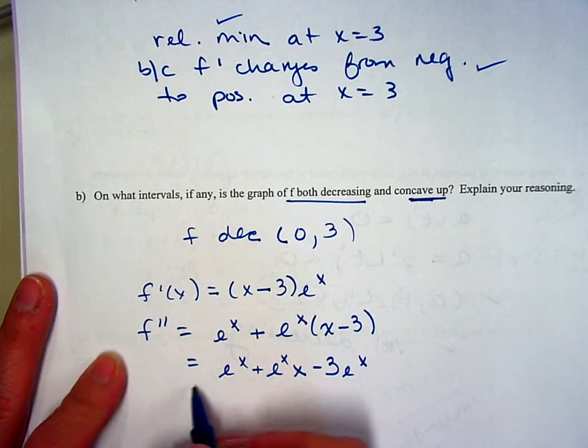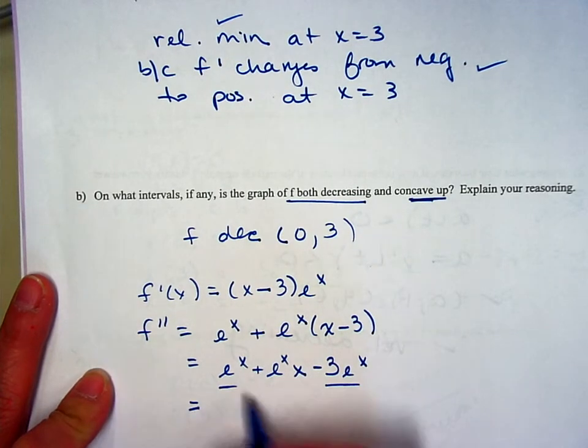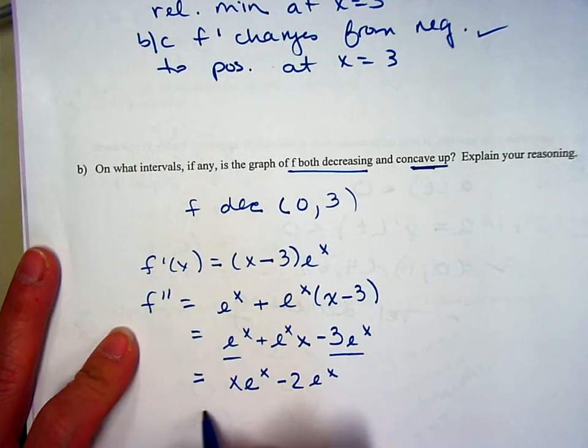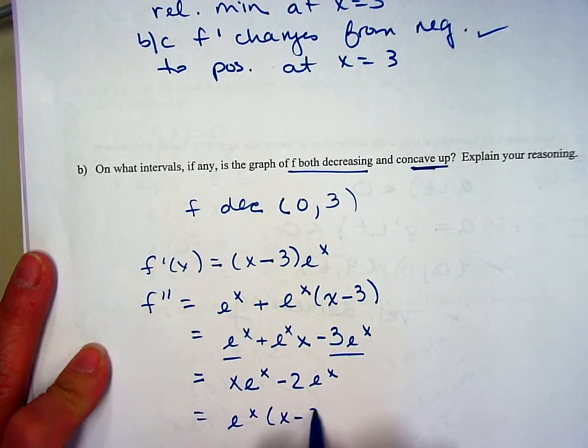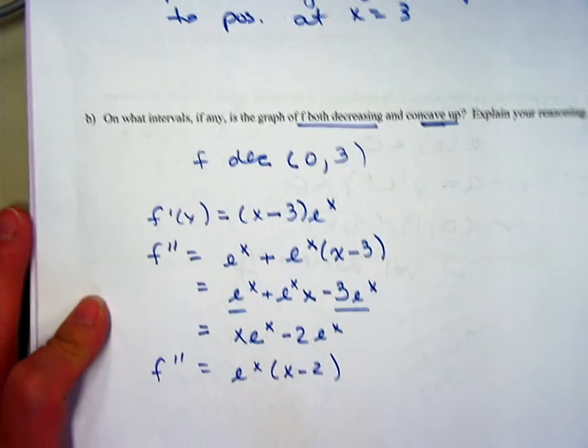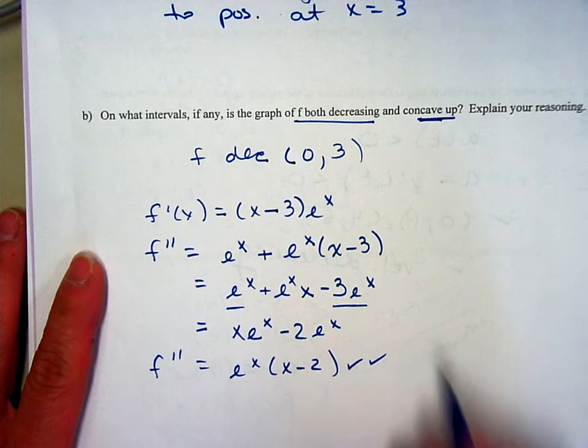I'm going to combine like terms. So I have e to the x, x minus 2 e to the x. Factor out an e to the x, x minus 2. This is my second derivative. It is two points for getting to the second derivative correctly.